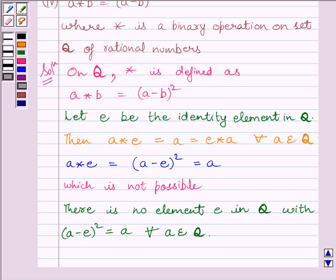So we can write, there is no element E in Q with A minus E whole square equal to A for every A belonging to Q.